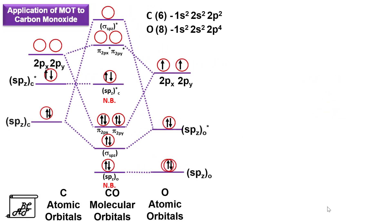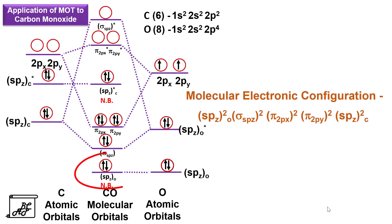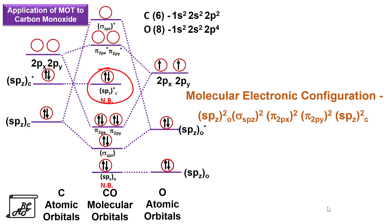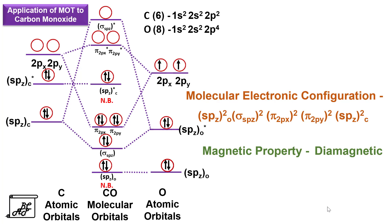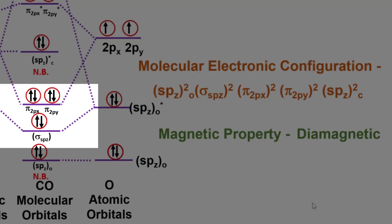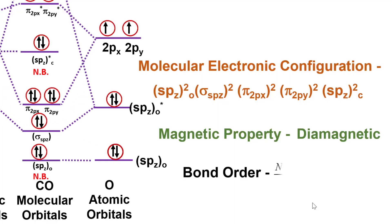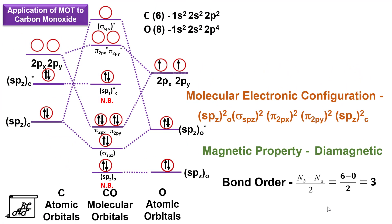The molecular electronic configuration of carbon monoxide is: spz² (non-bonding, oxygen), σspz², π2px², π2py², spz*² (non-bonding, carbon). Since there are no unpaired electrons, CO is diamagnetic. There are 3 bonding molecular orbitals containing pairs of electrons — sigma spz, π2px, and π2py — giving a bond order of 3. This explains why N₂⁺ is unstable whereas CO⁺ is a stable molecule.